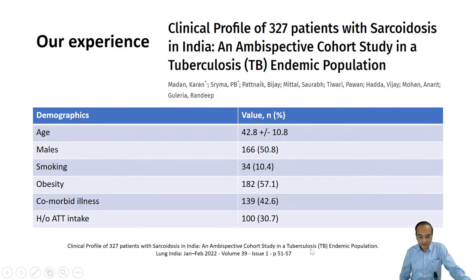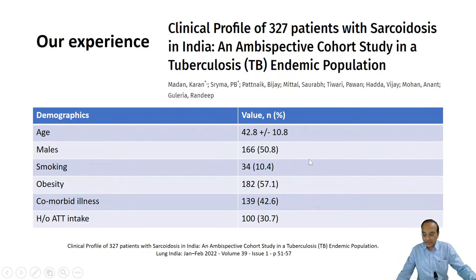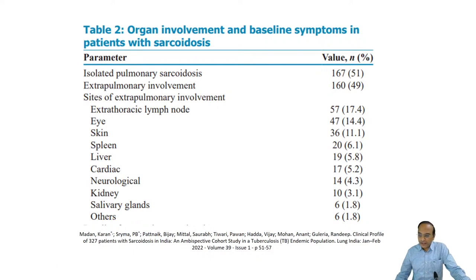One study we recently published looked at the clinical profile of around 320 patients. The age group was as discussed, with equal preponderance of males and females. Smoking was present in only 10% — sarcoidosis has a negative association with smoking, one of the very few respiratory diseases with this finding. One-third had a history of ATT intake in the past because of misdiagnosis. Extra-pulmonary and isolated pulmonary sarcoid were almost equal in this group.